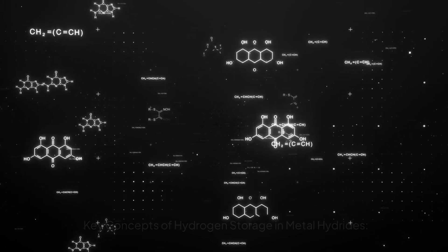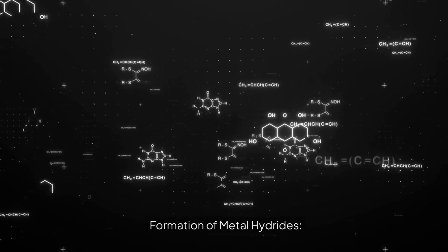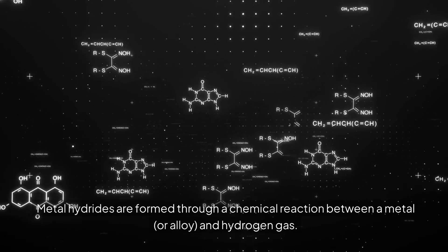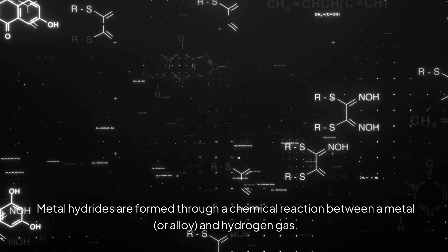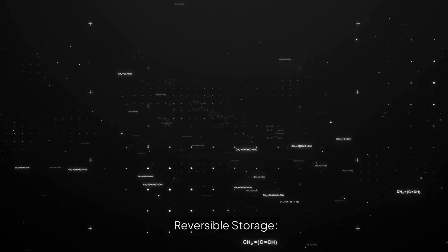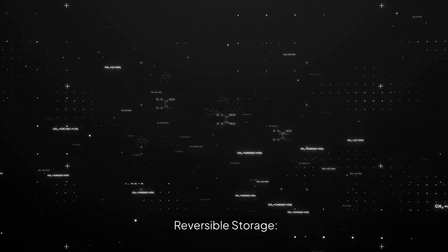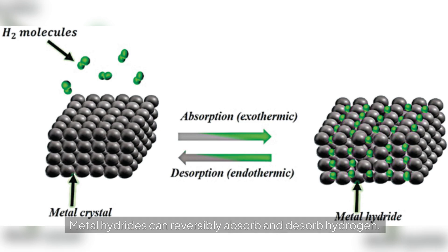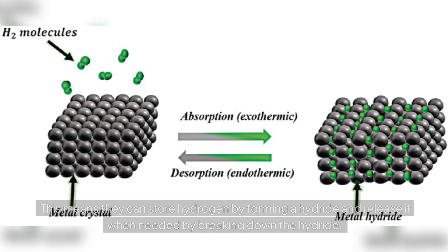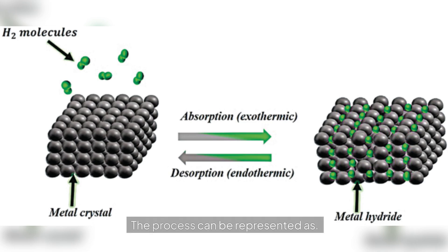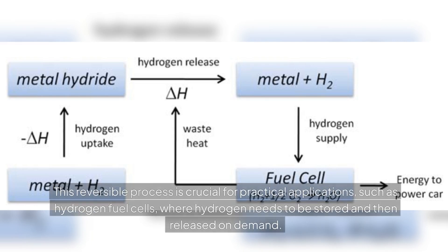Key concepts of hydrogen storage in metal hydrides. First, formation of metal hydrides: metal hydrides are formed through a chemical reaction between a metal and hydrogen gas. Second, reversible storage: metal hydrides can reversibly absorb and desorb hydrogen. This means they can store hydrogen by forming a hydride and release it when needed by breaking down the hydride. This reversible process is crucial for practical applications such as hydrogen fuel cells, where hydrogen needs to be stored and then released on demand.